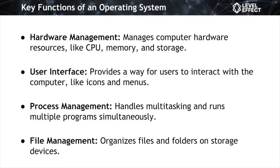How can we summarize the key functions of an operating system? We can think about it in four categories. The first is hardware management, which involves the coordination and allocation of hardware resources — the CPU, memory, storage devices, and input/output devices — ensuring they're used efficiently. The operating system regulates the sharing of resources among various programs and processes to prevent conflicts and ensure smooth operation.